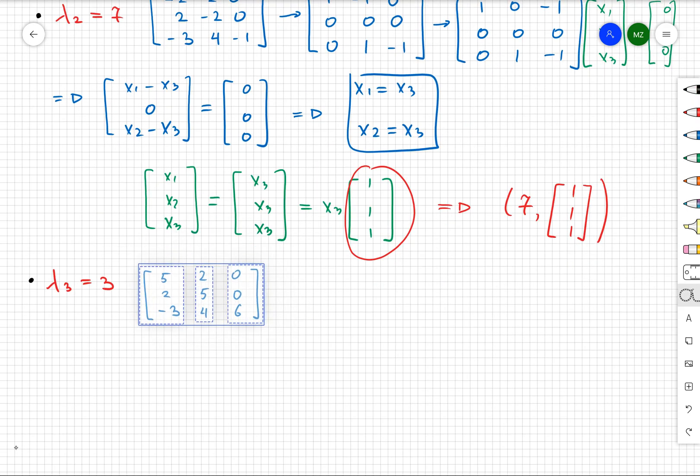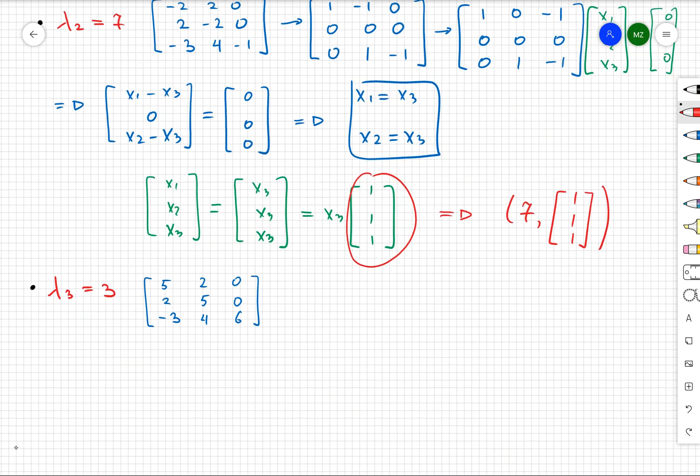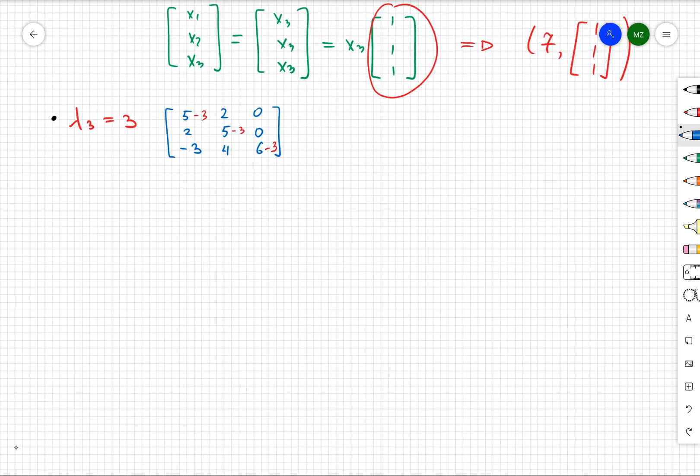Finally, the last eigenvalue is λ₃ = 3. From there, I can see that my matrix is going to be [2, 2, 0; 2, 2, 0; -3, 4, 3]. Again, doing row simplification, we can obtain the following matrix: